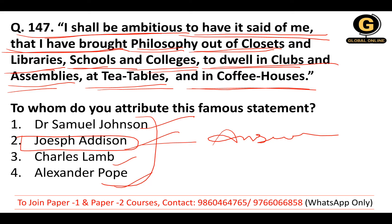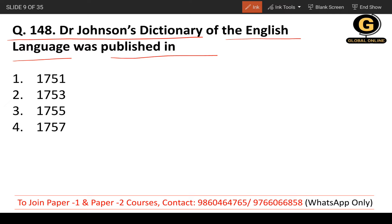Question 148: Dr. Johnson's Dictionary of the English Language was published in which year? This question appears very frequently in previous year papers. It was published in 1755. Do remember and don't forget it — 1755.